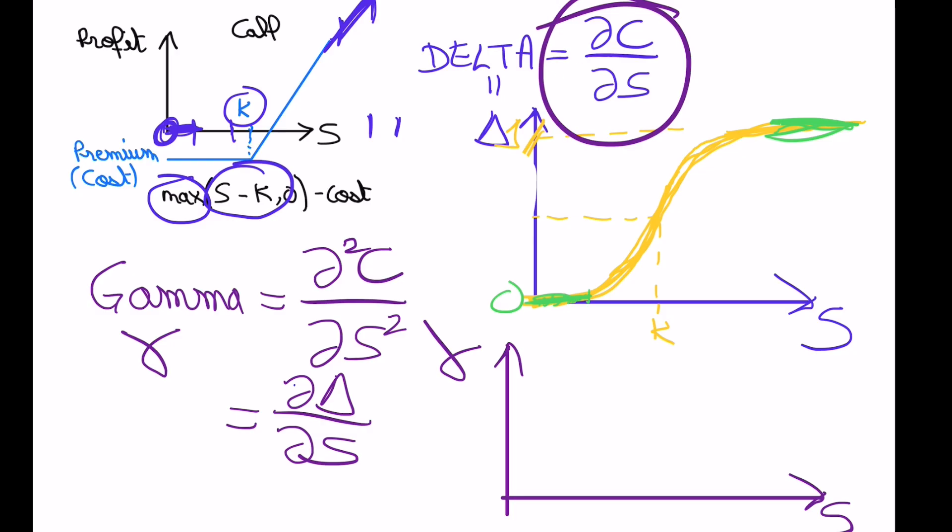So because it's the second derivative here, just like we did before, it's the slope of this graph with respect to the stock price.